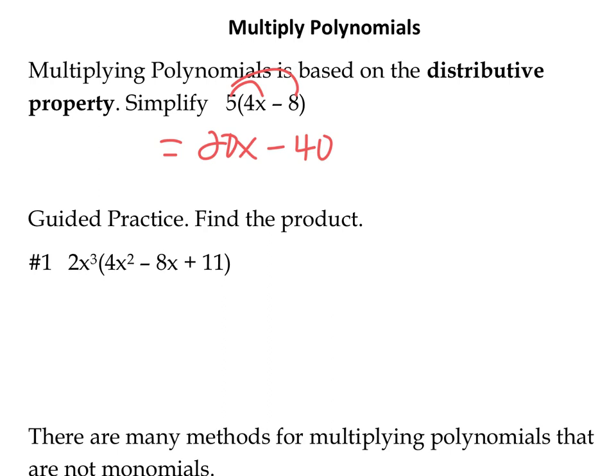There's nothing else we can do — those aren't like terms. So that's the distributive property. We can do that with monomials and other polynomials as well. For instance, in number 1, to find the product we can distribute 2x to the 3rd into the parentheses. So 2x³ times 4x² would be 8x⁵. We multiply the coefficients, the 2 and the 4, and when we multiply like bases we add their exponents when multiplying.